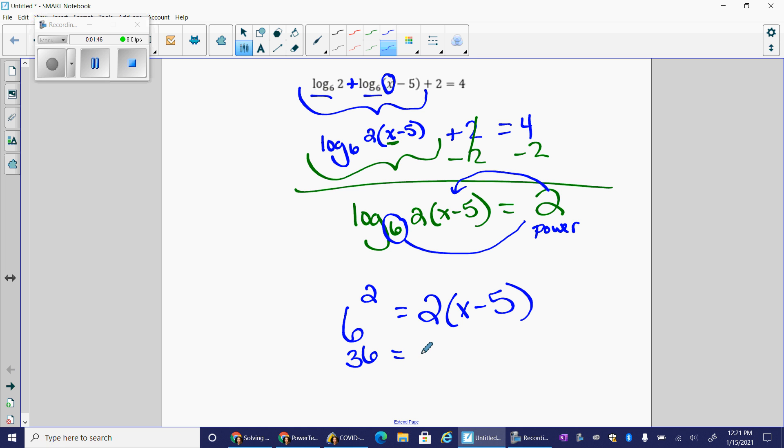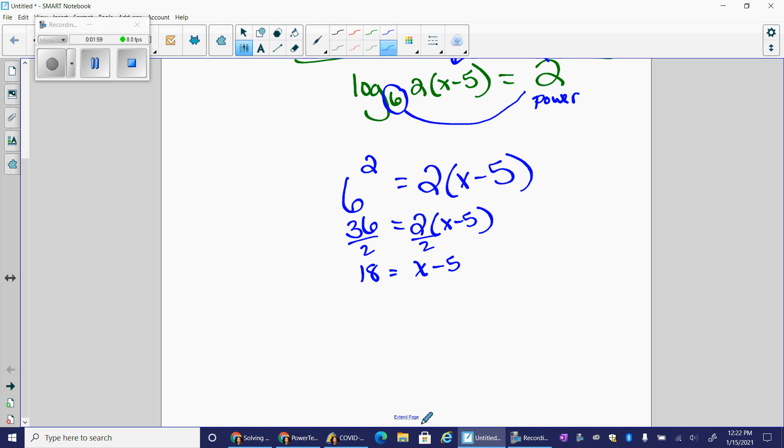This is just some algebra here. I get 36 equals two times x minus five. I'm going to divide by two right there and I get 18 equals x minus five. I add five to each side to get my final answer that x equals 23.